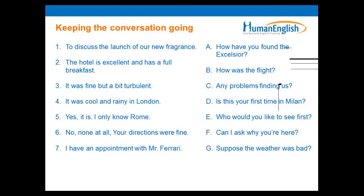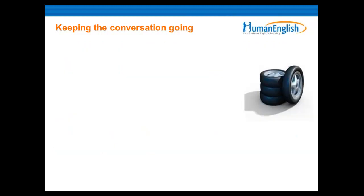As you can see, these are different questions to use when you meet people for the first time — about the flight, directions, the hotel, and the reason or purpose for your visit. This is a good way to start a conversation when meeting people for the first time — to get to know them and make them feel comfortable. It's also important to keep the conversation going — after the small talk, you have to continue. You may go to a restaurant for lunch or have some small talk before the meeting begins.